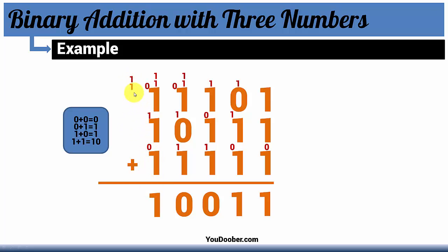0 plus 1 is 1. 1 plus 1 is 10. Put your 0 down in your answer, carry your 1 to the next column, and that number there just falls down.